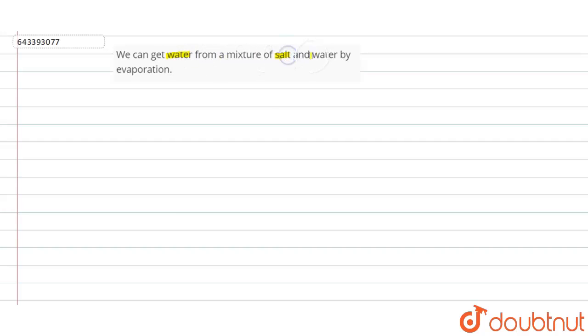We can get water from a mixture of salt and water by evaporation. Can we get the water from the mixture of salt and water by evaporation? We have to state if the statement is correct or incorrect. So first we have to check that the process of evaporation involves.